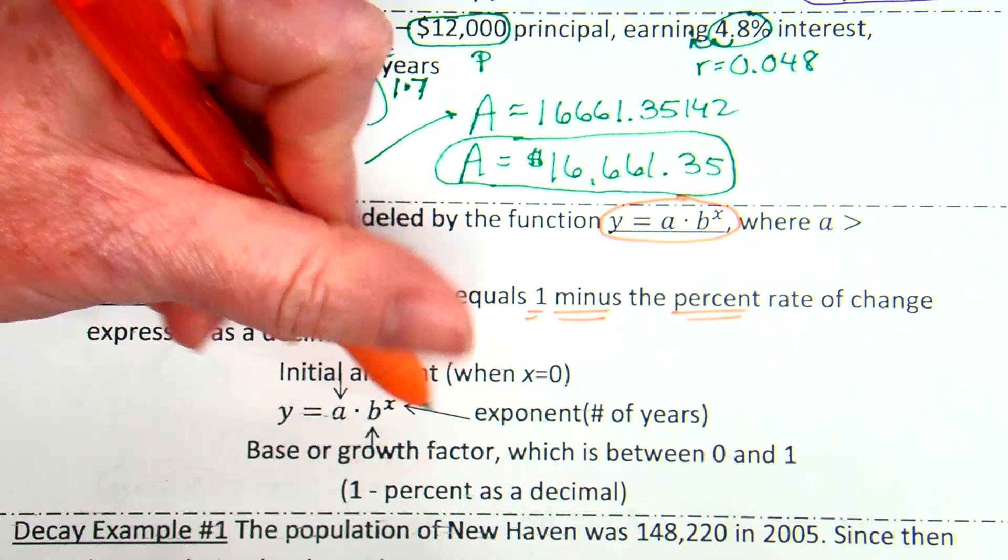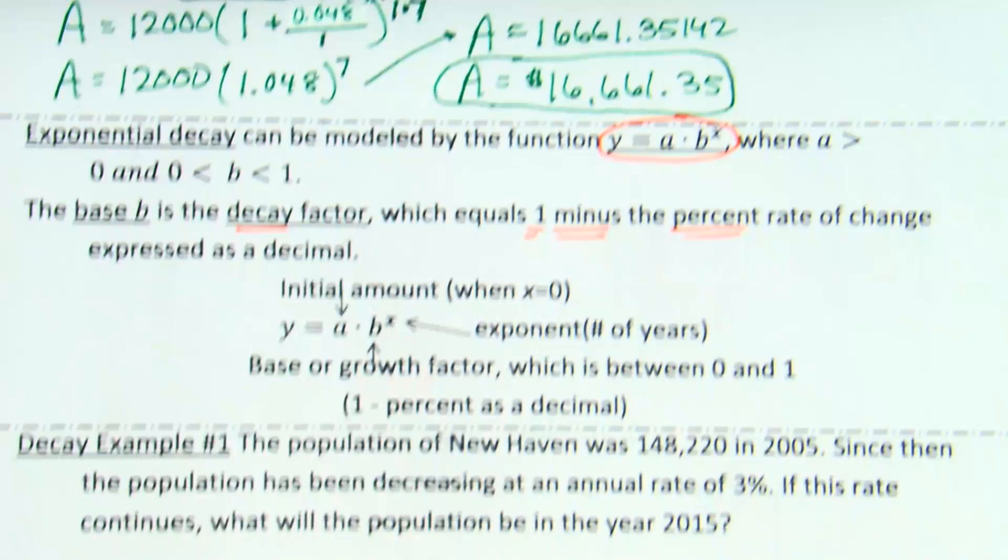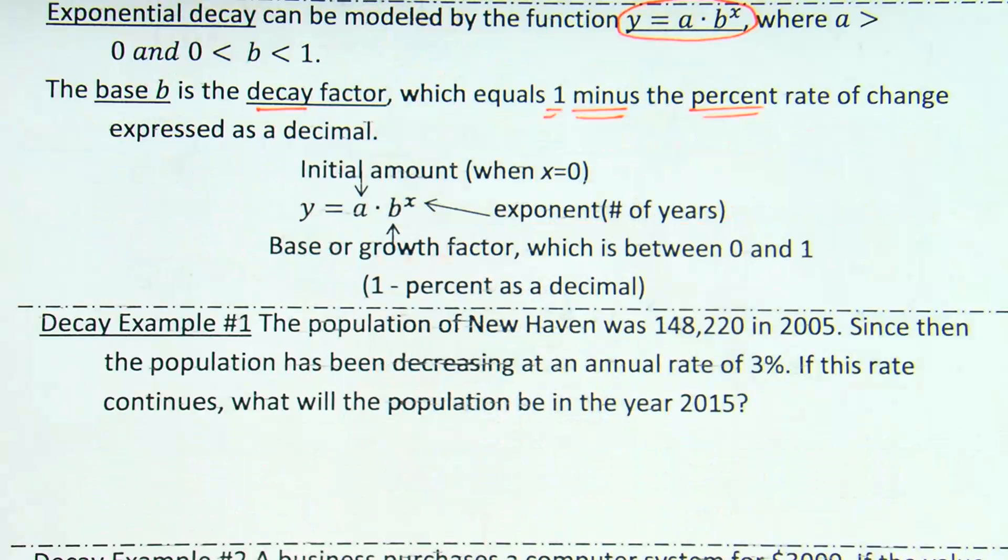Okay. Let's look at example one. Population of New Haven was 148,220. That was in 2005. Since then, the population has been decreasing at an annual rate of 3%. If this rate continues, what will be the population in the year 2015? Okay. Huh? They are older. Because I used them previously. So. Yeah, when it says, when will the population... Well, I feel like it was right around 2015 when I made them. So.